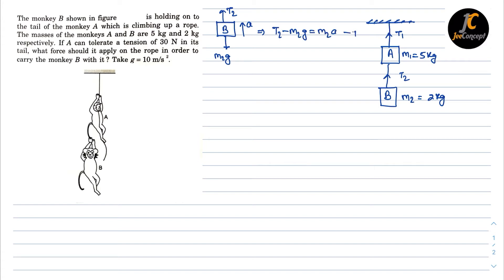For the free body diagram of monkey A: tension T1 acts upward, weight M1g acts downward, and T2 also acts downward. The acceleration of monkey A is also a. So from this we get T1 minus T2 plus M1g equals M1a. This is equation number two.